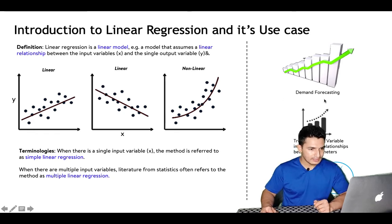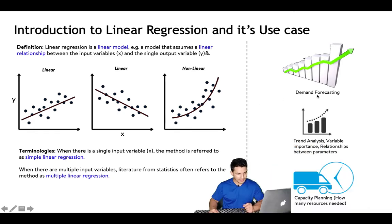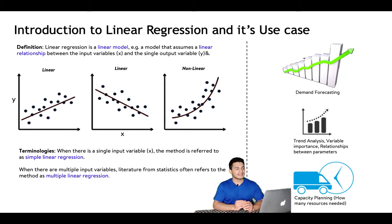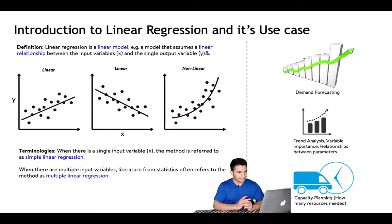Linear regression is used in demand forecasting, trend analysis to find relationships between parameters, prediction problems, and capacity planning — for example, estimating how many resources will be needed. With that understanding of what a linear model is and which problems it applies to, let's go into much more depth.